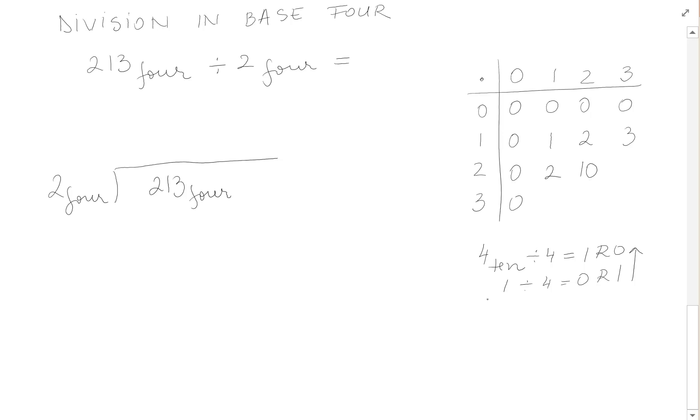2 times 3 is 6 in base 10. Well, let's divide that. And we have 6 divided by 4, or 4 goes into 6, 1 times with remainder 2. And 1 divided by 4 is 0 remainder 1. So 1, 2. 3 times 1 is 3. 3 times 2 is 6, but we just computed that and we got 1, 2.